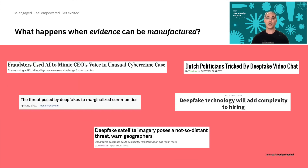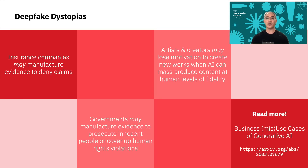These are a few headlines about people abusing generative technologies — things like tricking a CFO into making a fraudulent payment or using a deepfake to have someone do a job interview for you. And taken to an extreme, we can imagine how generative technologies can lead us towards some very dystopian outcomes, such as insurance companies manufacturing evidence to deny claims or governments manufacturing evidence to lock up innocent people.